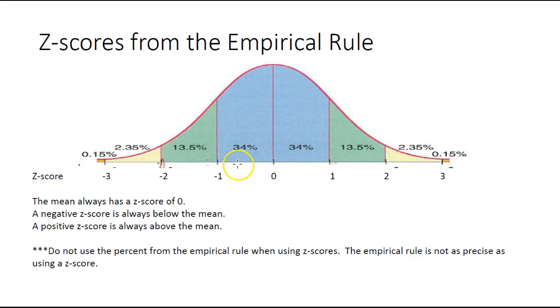It's good to remind you that when we use z-scores, these numbers here for the empirical rule are no longer in play. These are estimates; the z-scores are going to give us a much better value.